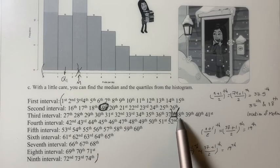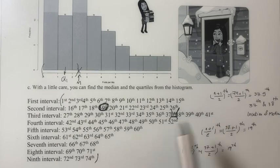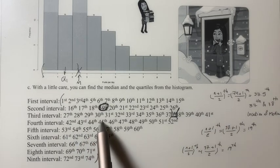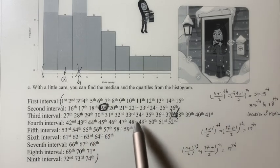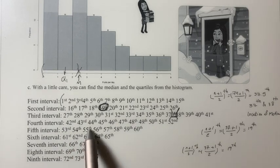So we should count 1, 2, 3, 4, 5, 6, 7, 8, 9, 10, 11, 12, 13, 14, 15, 16, 17, 18, 19.